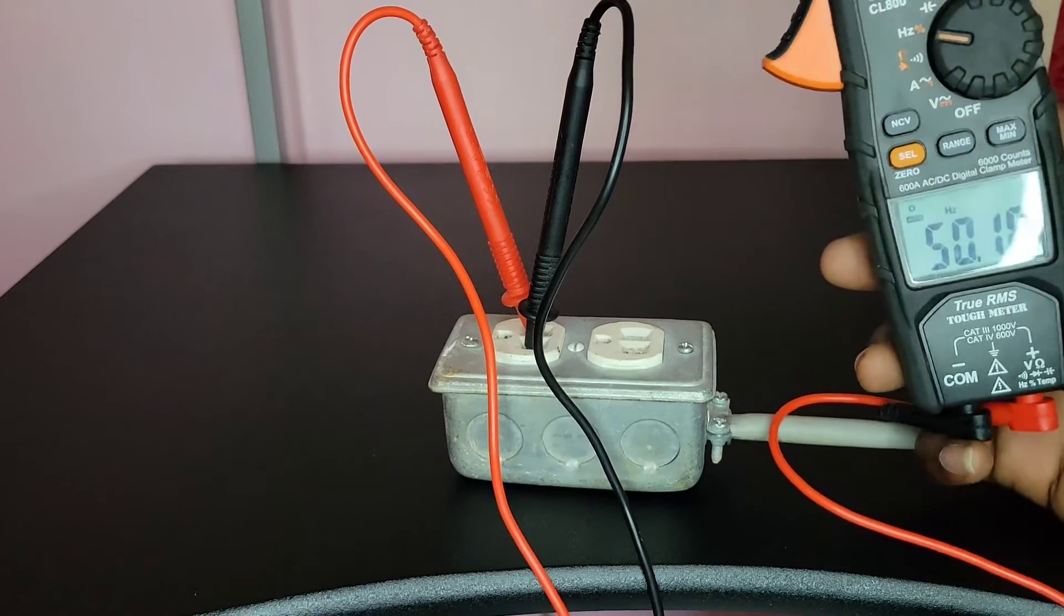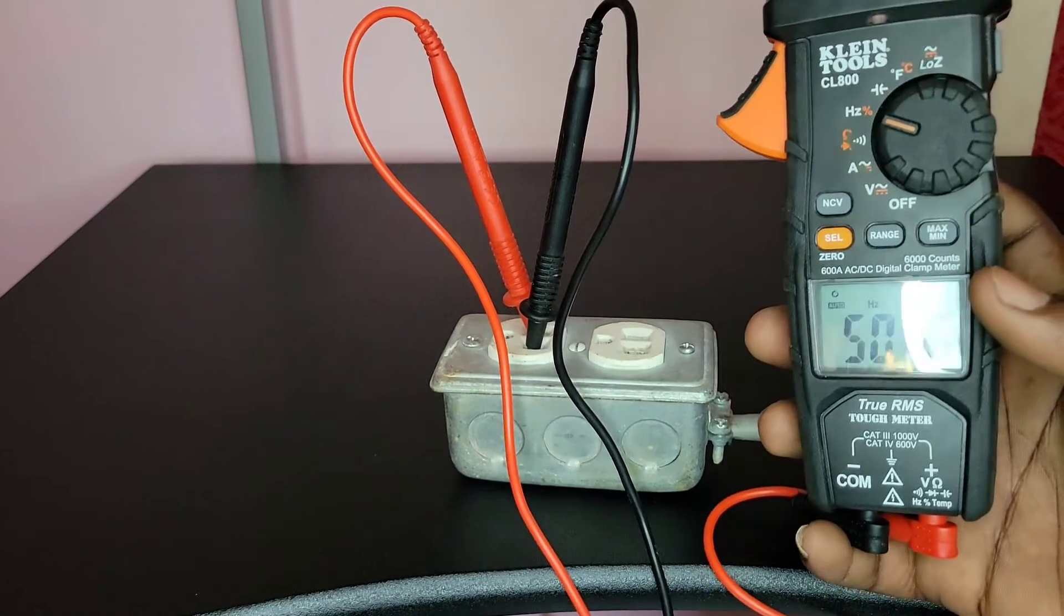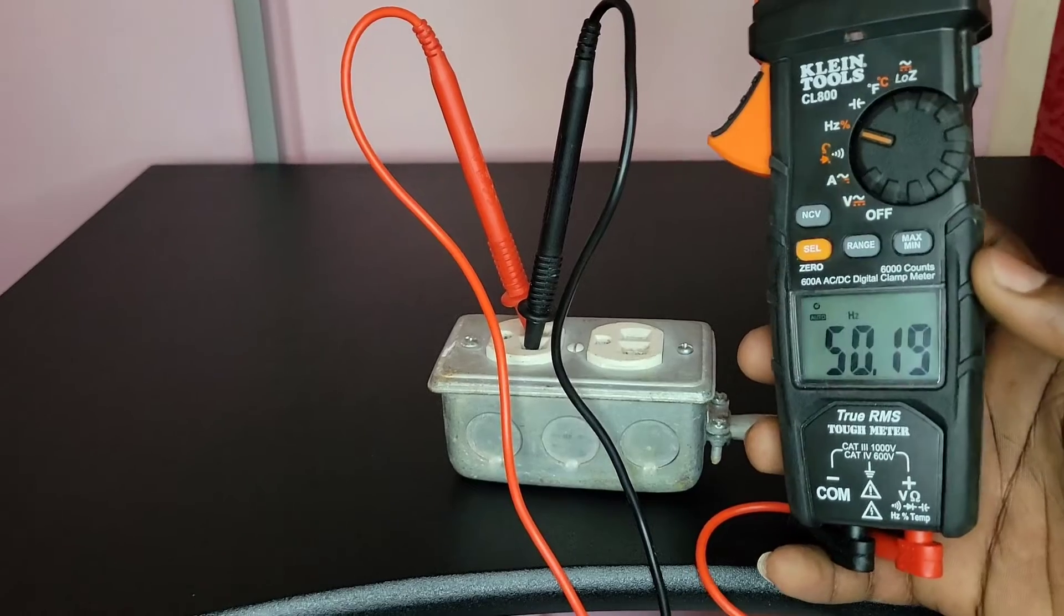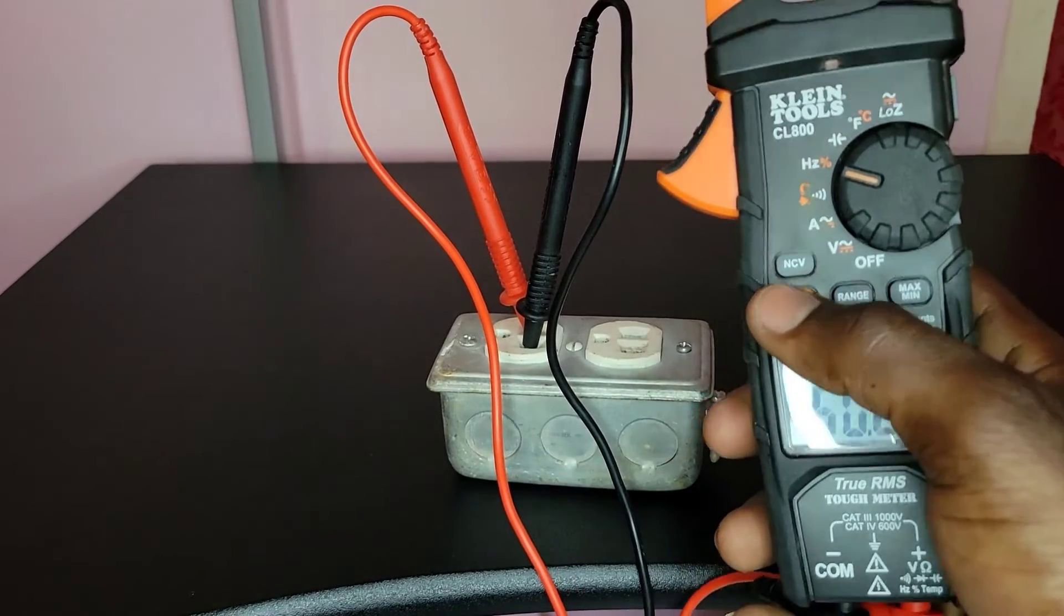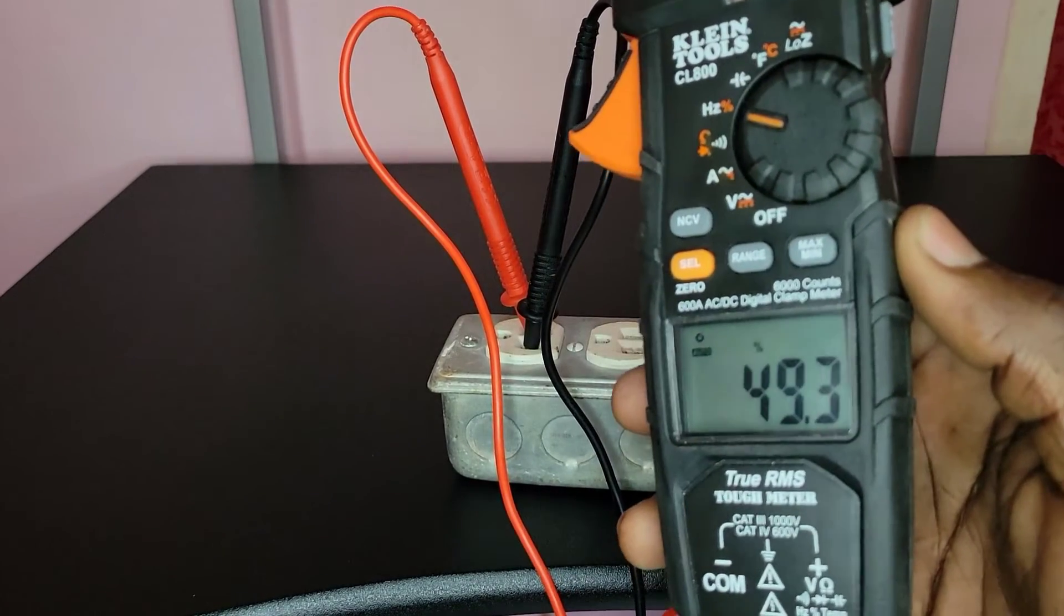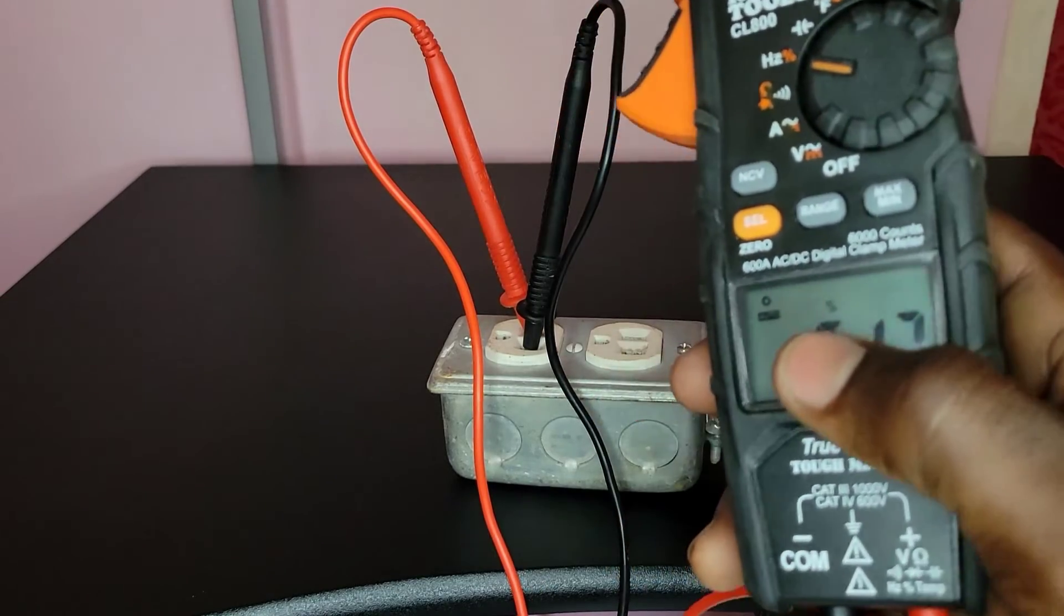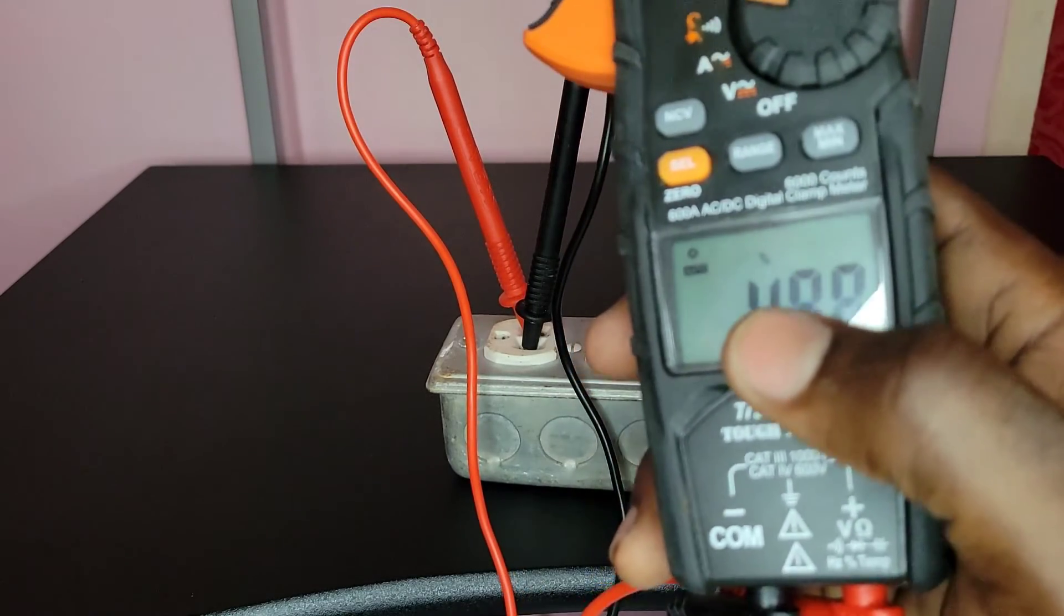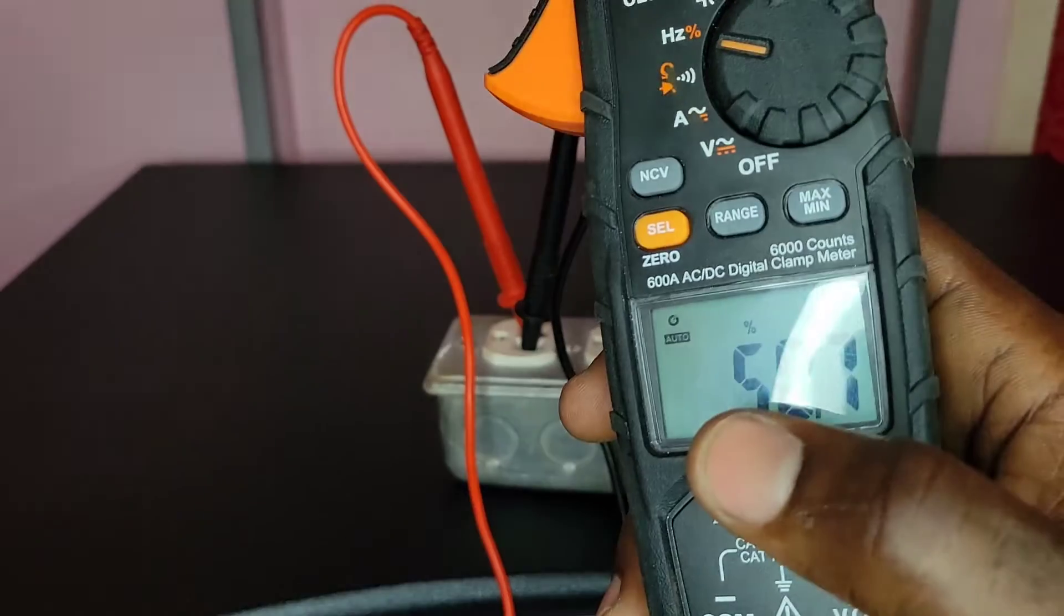The principle remains the same, but for this meter, it's now on frequency. I'm going to change it to duty cycle. Now it's on duty cycle. You should see the percentage symbol because duty cycle is a percentage.